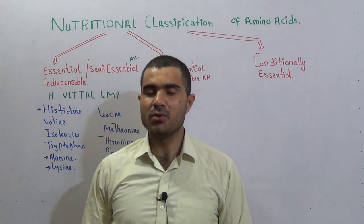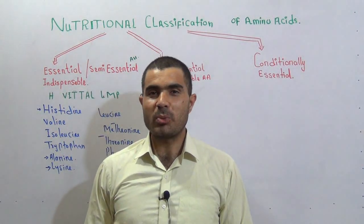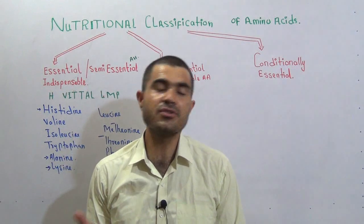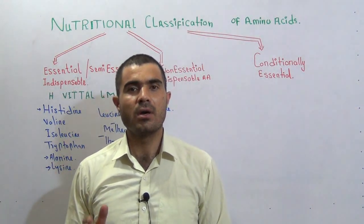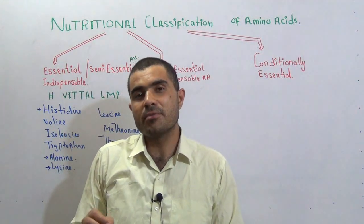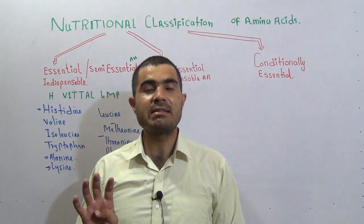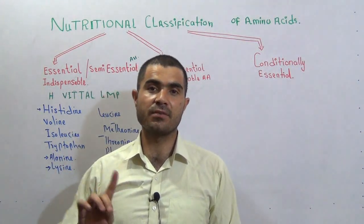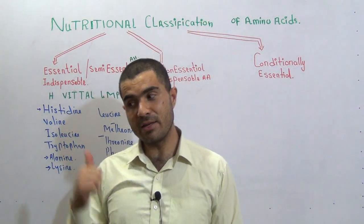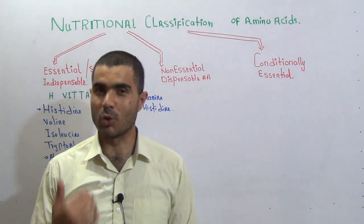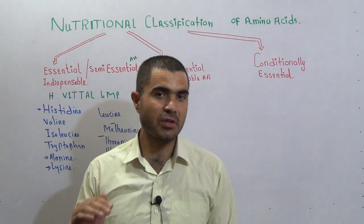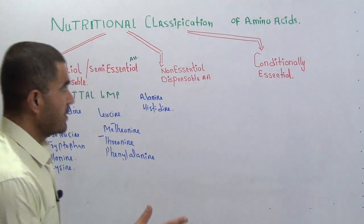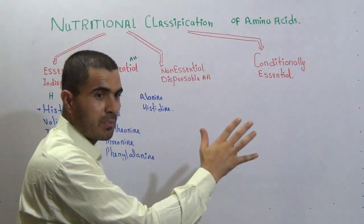Hello, hi, welcome. This is Dr. Hadi here and you are watching Medical Globe. Today's topic is from biochemistry, that is classification of amino acids on the basis of nutritional value. We have already discussed another topic on classification of amino acids, but that was on the basis of polarity. In biochemistry, amino acids can be classified in four ways: on the basis of polarity, on the basis of R-group, on the basis of nutritional value, and on the basis of metabolic role. Today's topic is classification of amino acids on the basis of nutritional value.